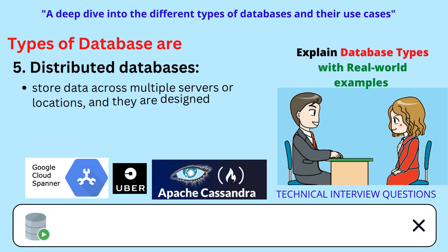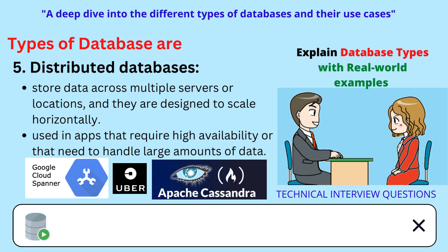Distributed databases store data across multiple servers or locations, and they are designed to scale horizontally. They are often used in applications that require high availability or that need to handle large amounts of data. Examples include Google Cloud Spanner and Apache Cassandra.